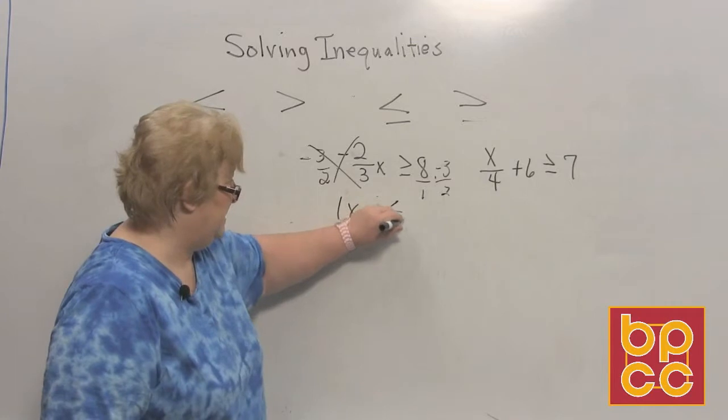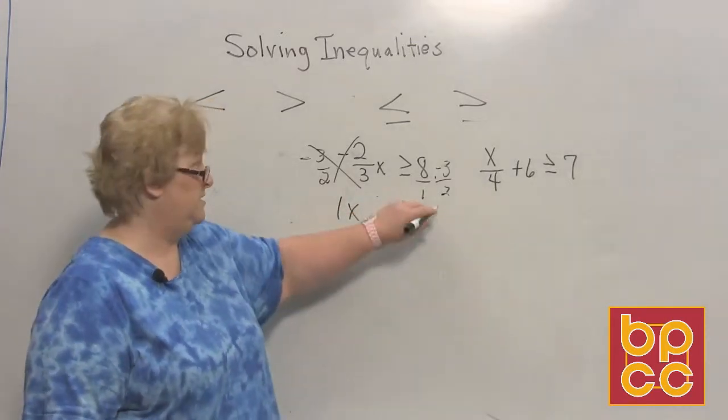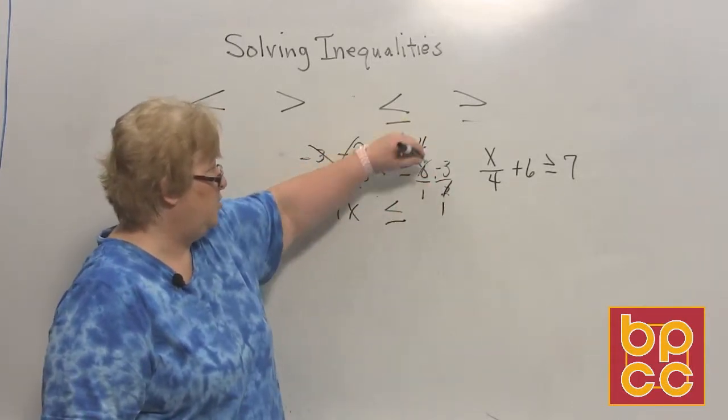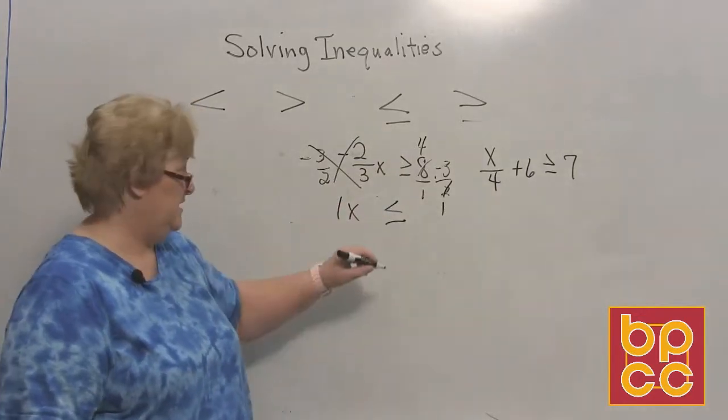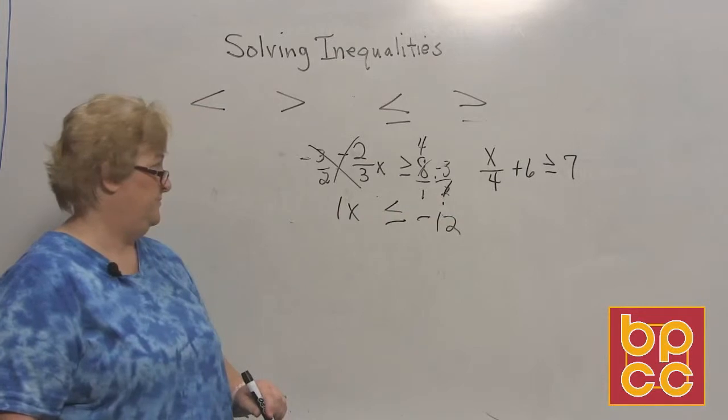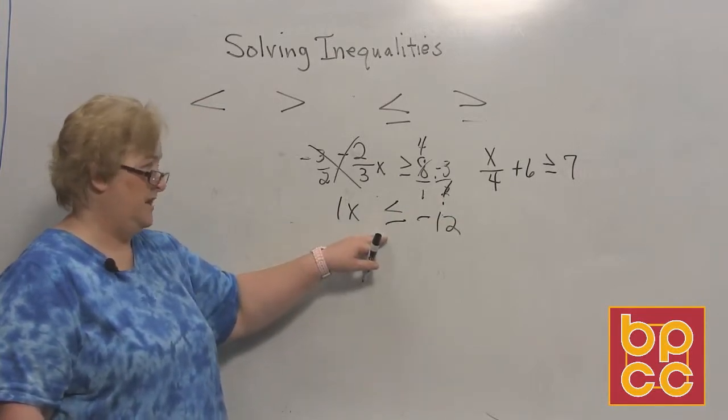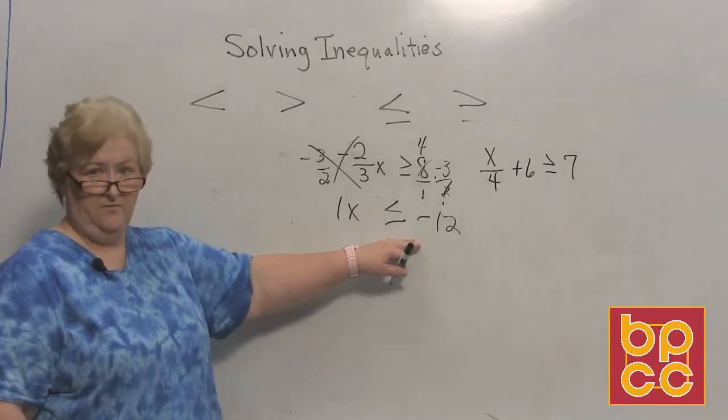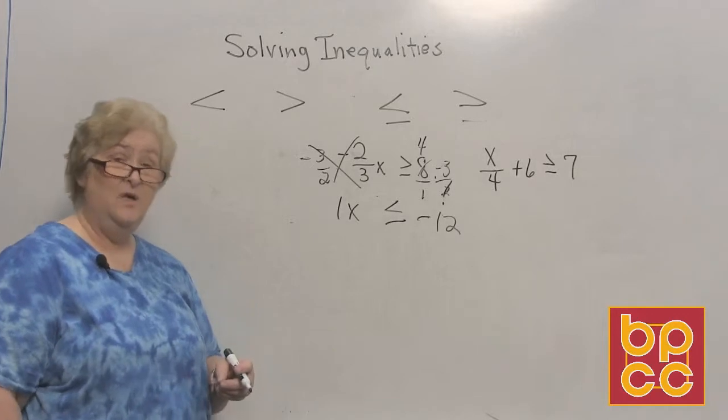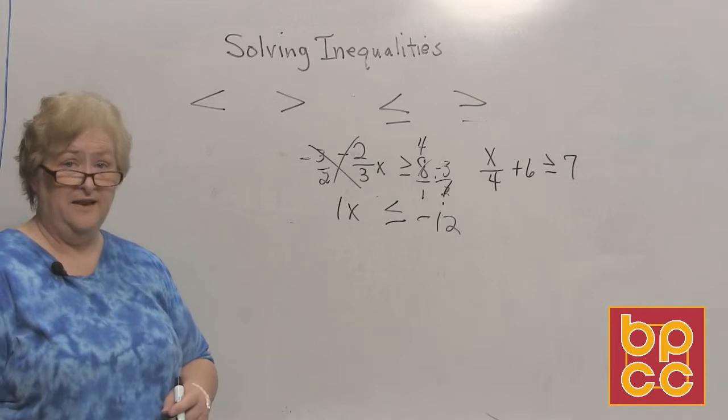I'm going to change that sign, and over here, I'm going to make this a little bit smaller for us. I'm going to go ahead and say 2 into 2 is 1, 2 into 8 is 4. 4 times a negative 3 is a negative 12. And so 1x is now less than or equal to a negative 12. So we had a couple things we had to take care of. We had to take care of a reciprocal, a negative reciprocal on both sides, and then change the sign because we had a negative variable.